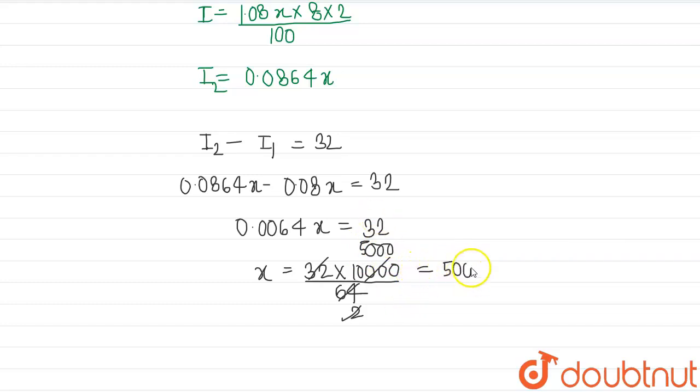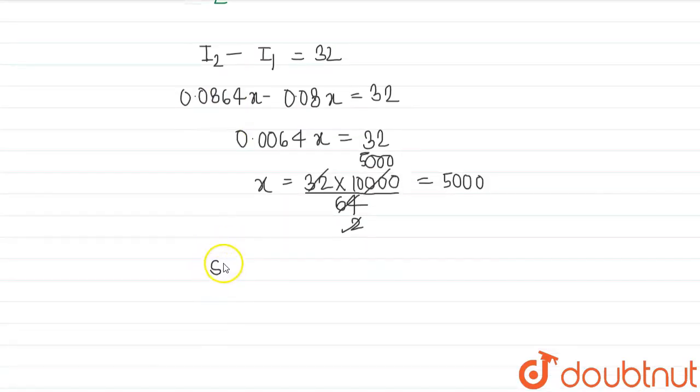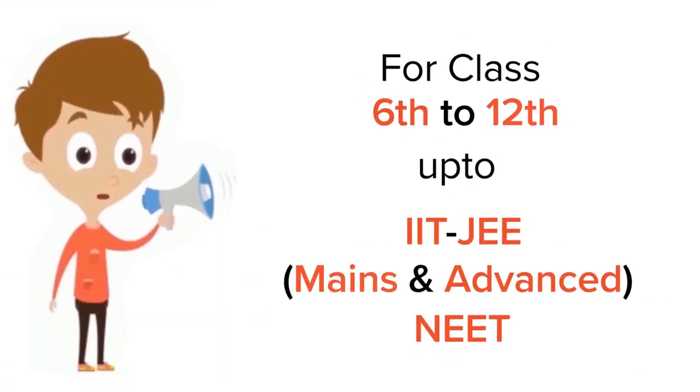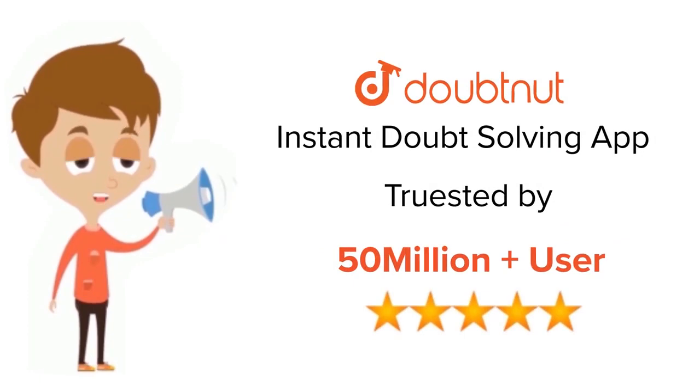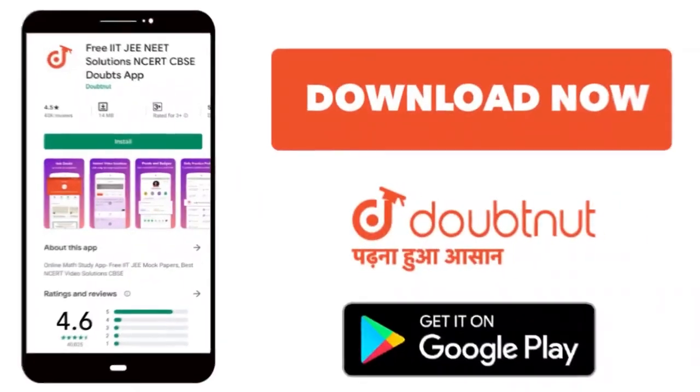So the sum of money is equal to 5000, which is the required answer. Thank you. For class 6 to 12, IIT and NEET level, trusted by more than 5 crore students, download Doubtnet app today.